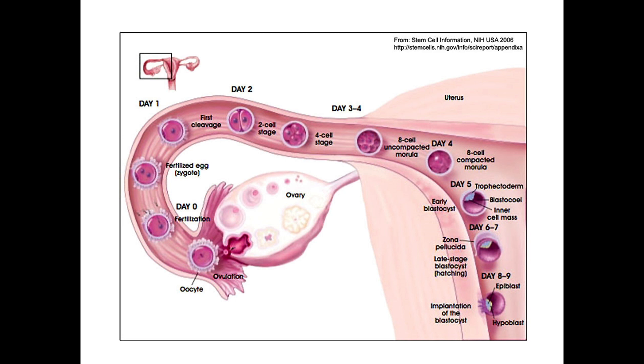Ectopic pregnancy can occur if the zygote implants in a location other than the uterus, and the most common site is the ampulla of the uterine tube.